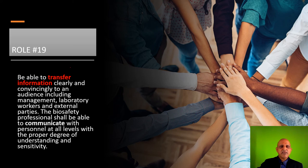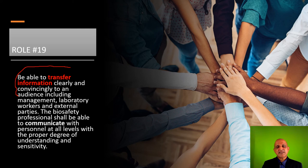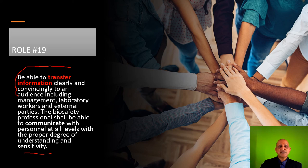The nineteenth role is to be able to transfer information clearly and convincingly to an audience, including management, laboratory workers and external parties. As a BSO, you have to maintain neutrality within an organisation — this involves separating your emotional aspects from the professional aspects, so be a professional. Do not maintain any kind of bias towards any individual and look at every individual objectively, as they are all functional components in an organisation. You should also understand the sensitivities of people based on local cultures and behavioural aspects, as different cultures may have different approaches towards safety or risk management.